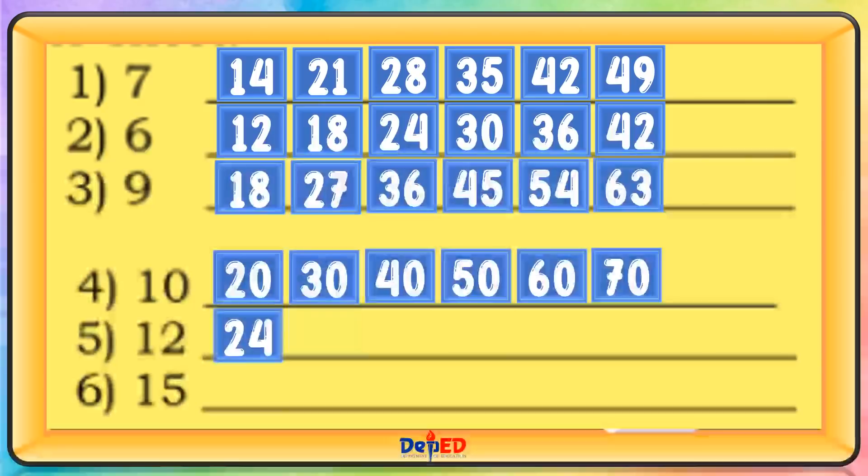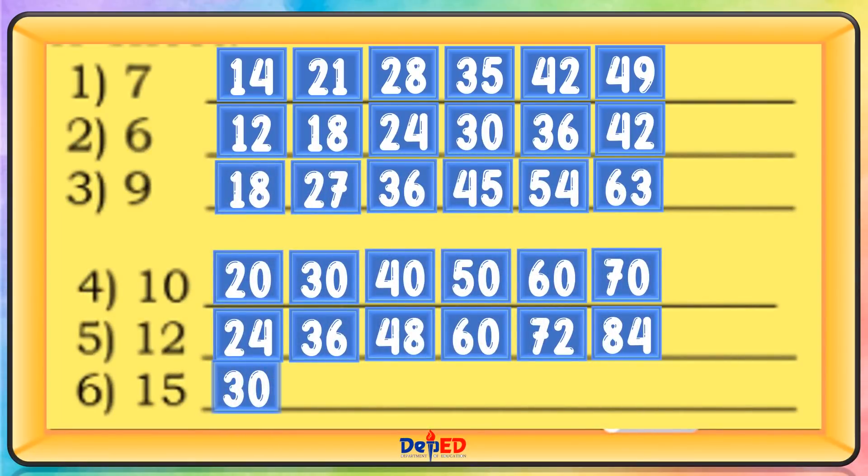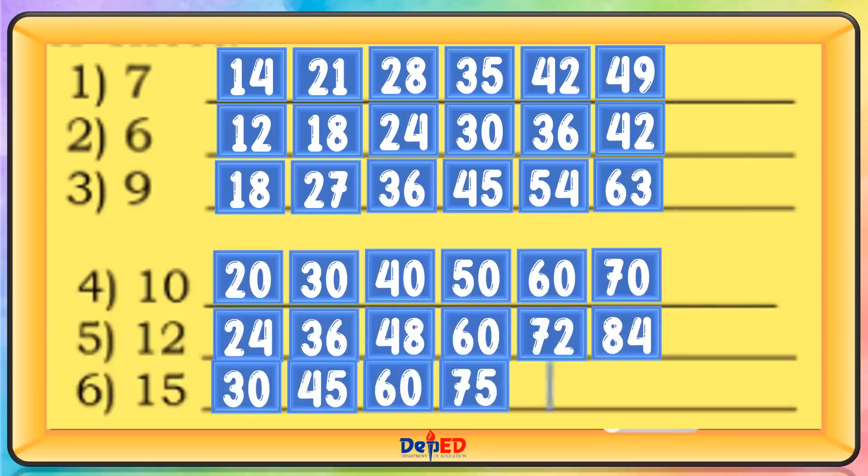Multiples of 12: 12, 24, 36, 48, 60, 72. Multiples of 15: 15, 30, 45, 60, 75, 90.